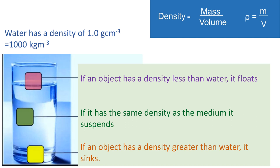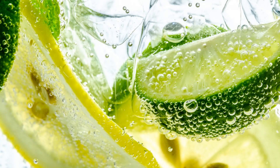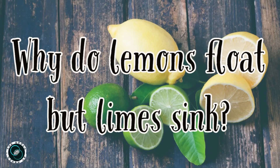The densities of both lemons and limes are very close to that of water. However, limes have roughly a one percent greater density than lemons, and that is all it takes. So there you have it — as simple as that. Lemons float because they are less dense than water, and limes sink because they are slightly more dense than water.